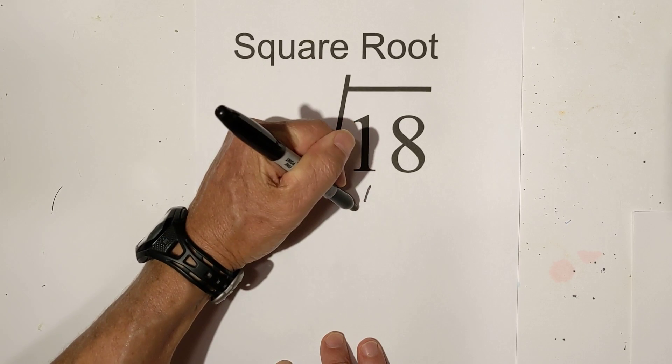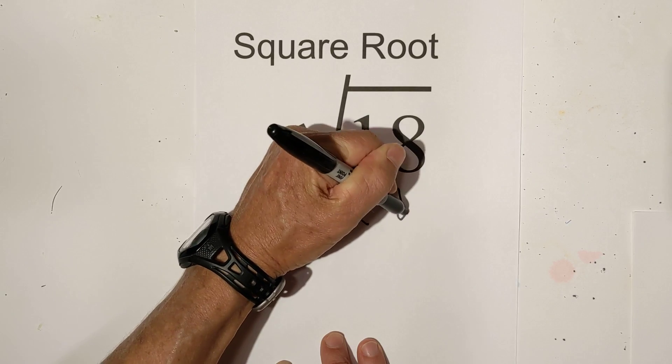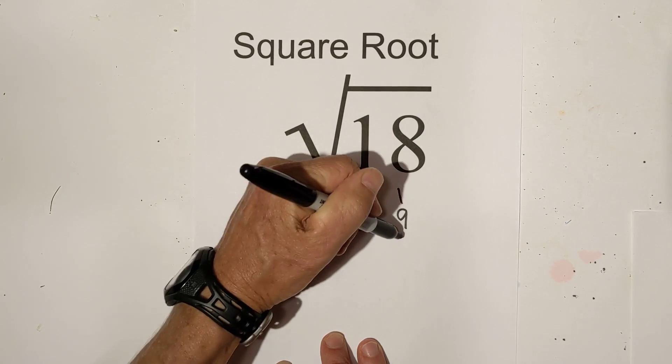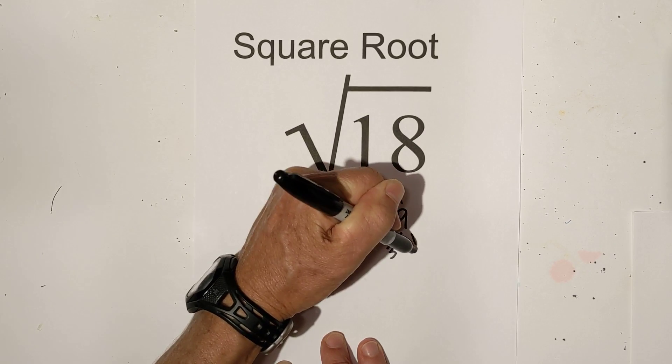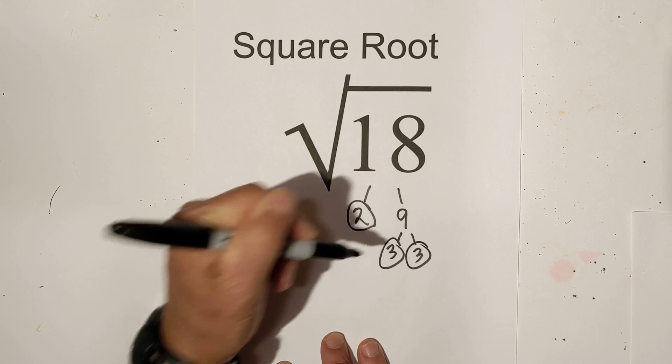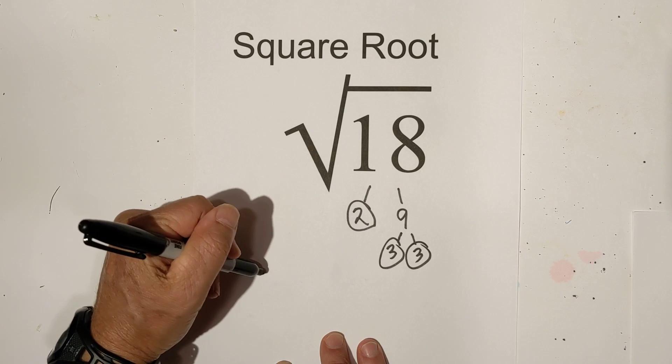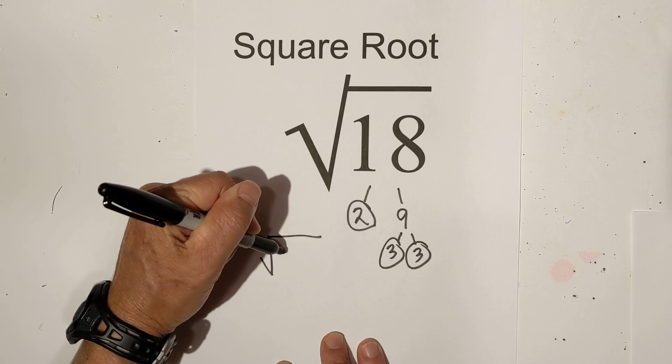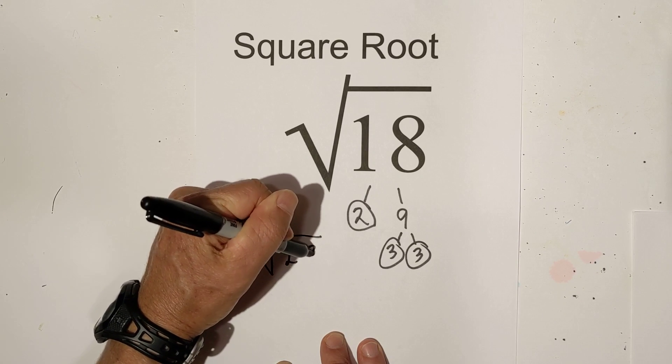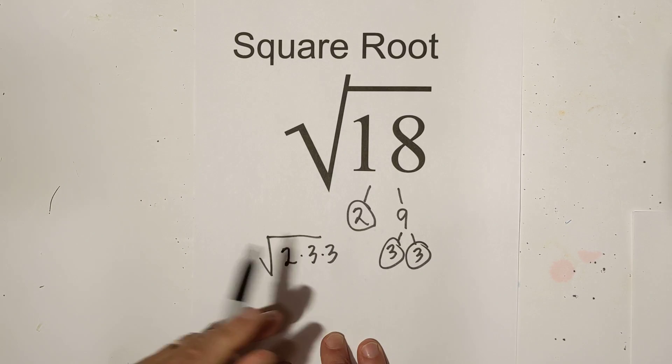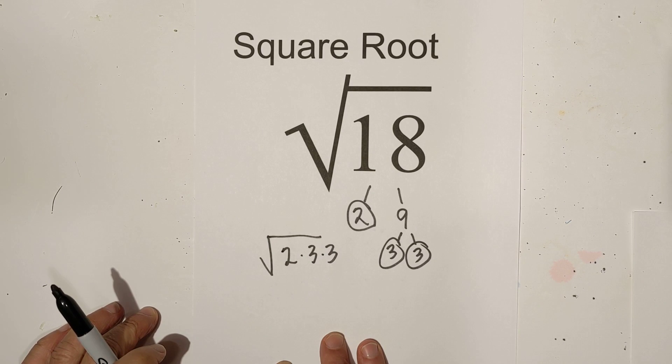I like to use a factor tree. So I'll go 2 times 9 equals 18, circle the 2, and then 3 times 3. Now I have all the prime numbers of 18. I can put them under the sign, and the rule is you can bring out pairs since it is a square root.